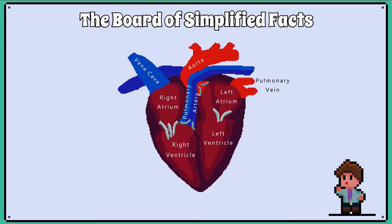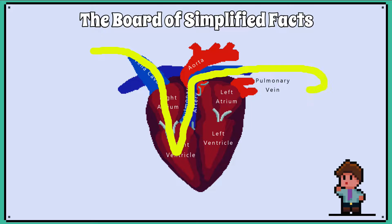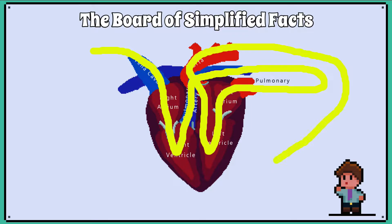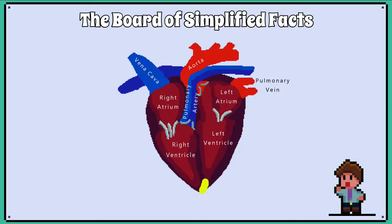This video will follow the path one red blood cell takes as it travels through the double circulatory system of the human body.